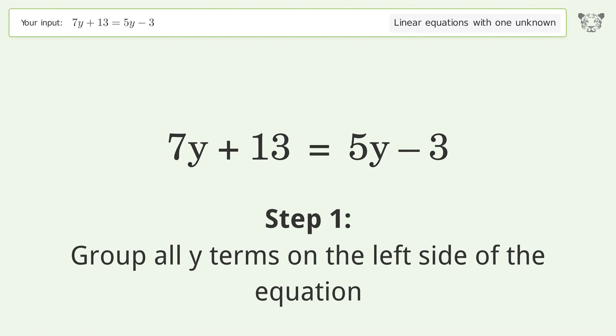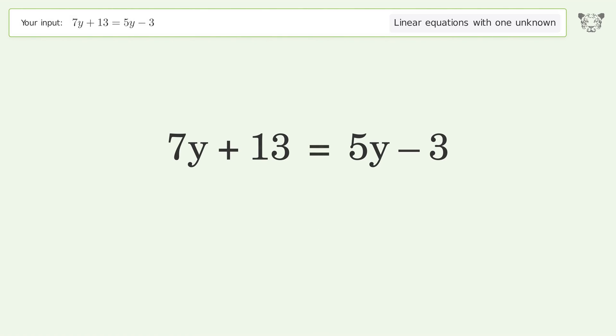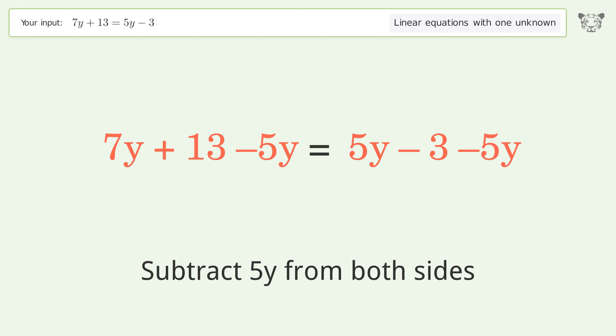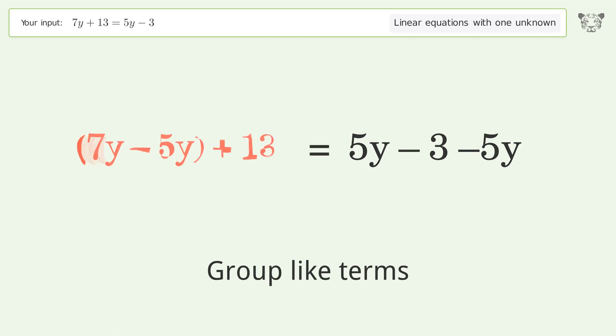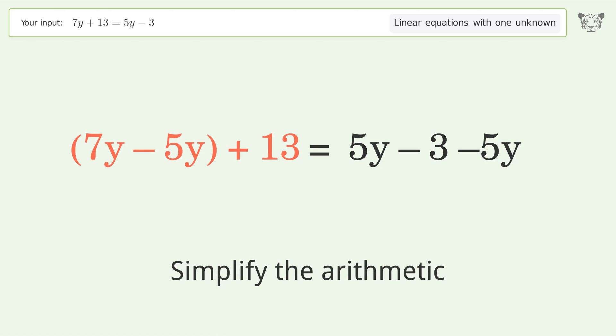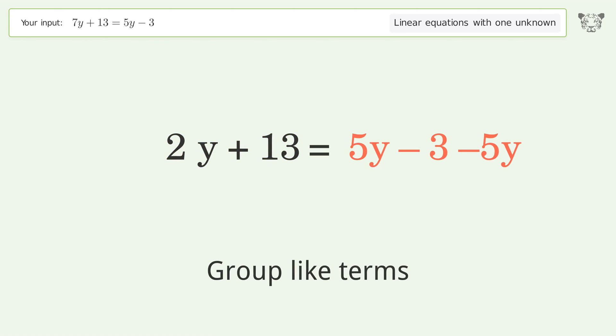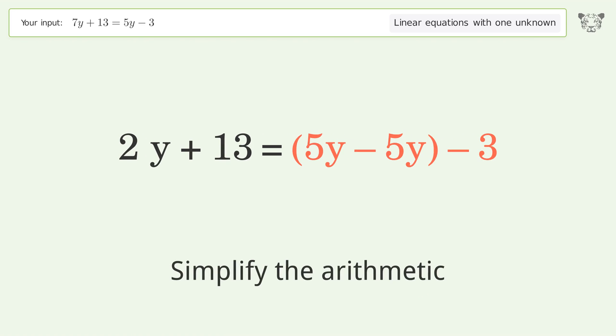Group all y terms on the left side of the equation. Subtract 5y from both sides. Group like terms. Simplify the arithmetic. Group like terms. Simplify the arithmetic.